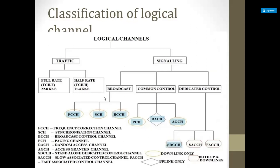Under control channels there are three categories: broadcast channel (BCH), common control channel (CCCH), and dedicated control channel (DCCH). The broadcast channel includes FCCH, SCH, and BCCH. The common control channel includes paging channel, random access channel, and access grant channel. The dedicated control channel includes standalone dedicated, slow associated, and fast associated control channels.